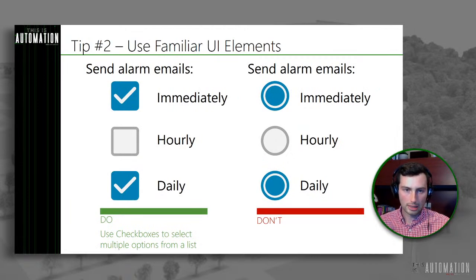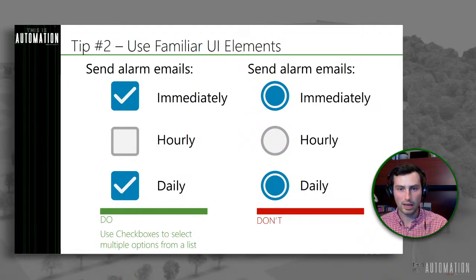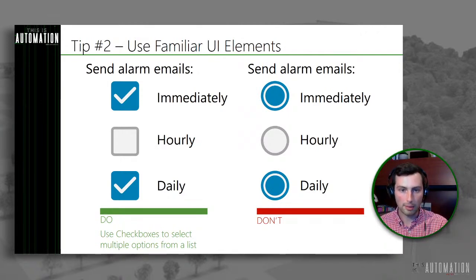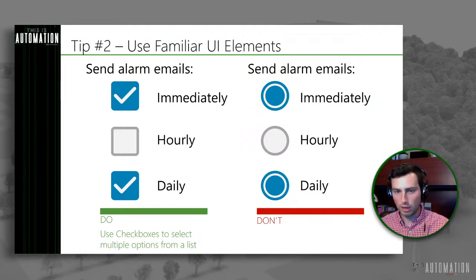Let's look at this example with checkbox. Let's say our machine can send alarm emails — anytime an alarm comes up, I want to send an email. What if I have options on how frequently I can send those? This is a great use case for a checkbox because I can select multiple options: I want an immediate notification but also a daily notification, a summary of all the alarms that have happened. So I'm selecting multiple options from a list — checkboxes is what we want. Using radio buttons here would be very confusing when you can select multiple options, and you definitely don't want to use it that way — it's going to confuse your users.